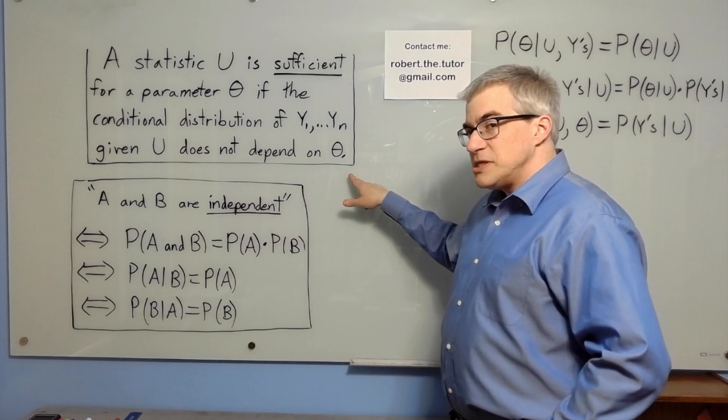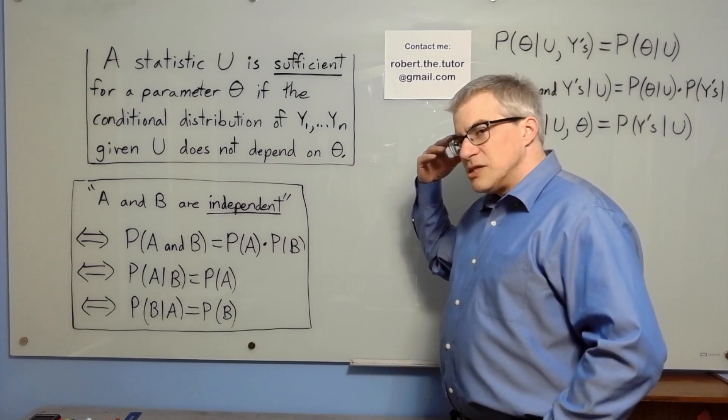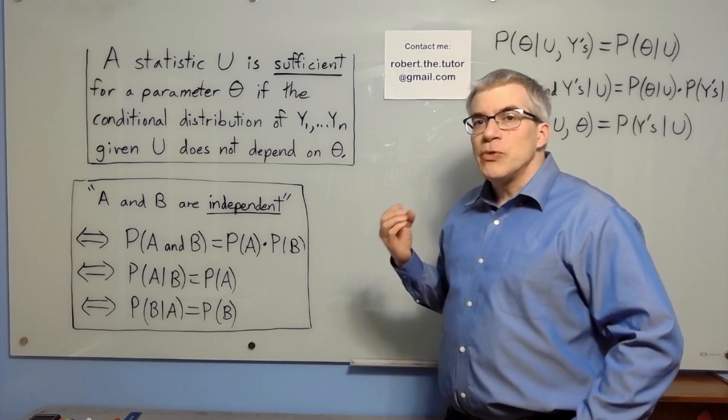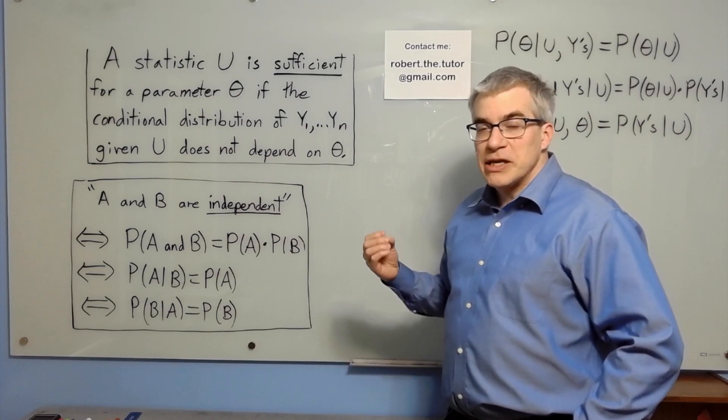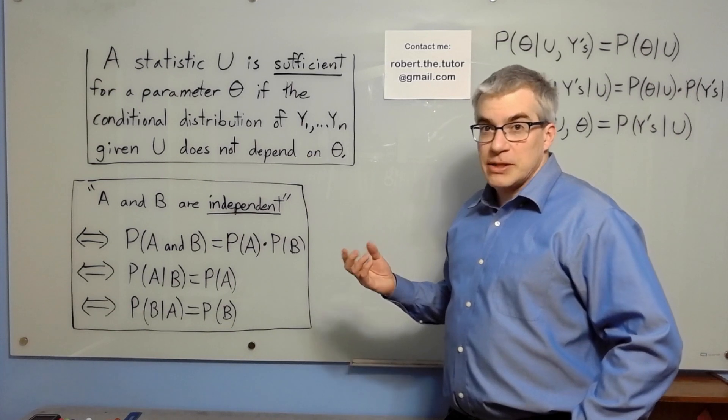That's written that way because it's easier to calculate, but it's completely at odds with the conceptual definition of a statistic is sufficient if you don't have to go back to the data for more information when you're making a prediction about theta. The statistic is sufficient in that way.